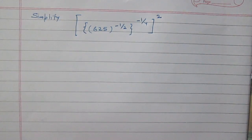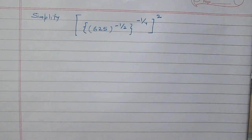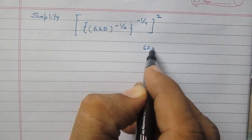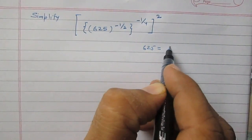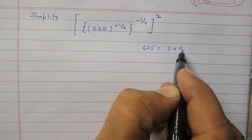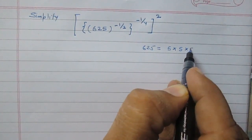Simplify: [{(625)^(-1/2)}^(-1/4)]^2. We know that 625 can be factorized as 5 multiplied by 5, then again 5 multiplied by 5.